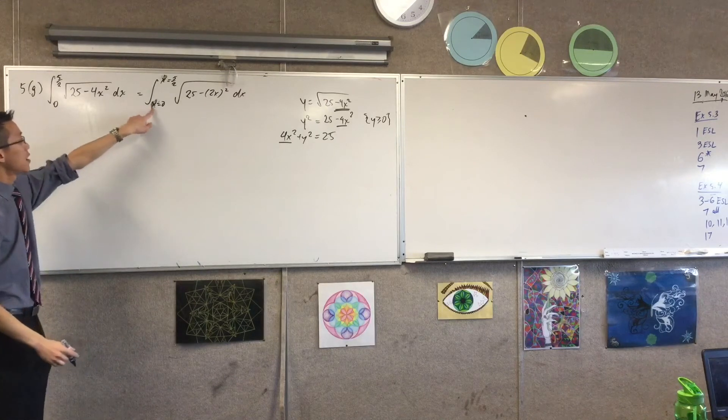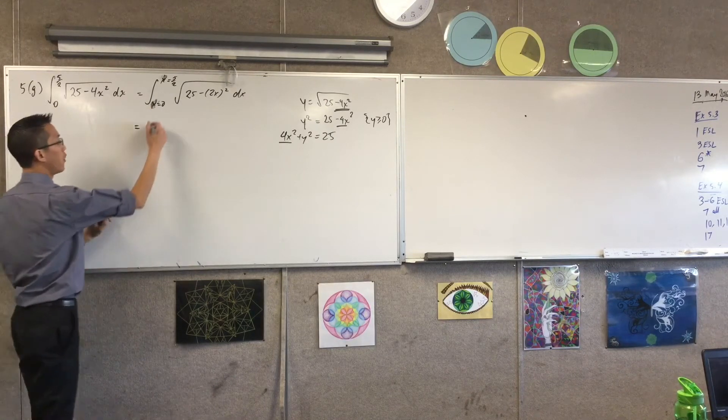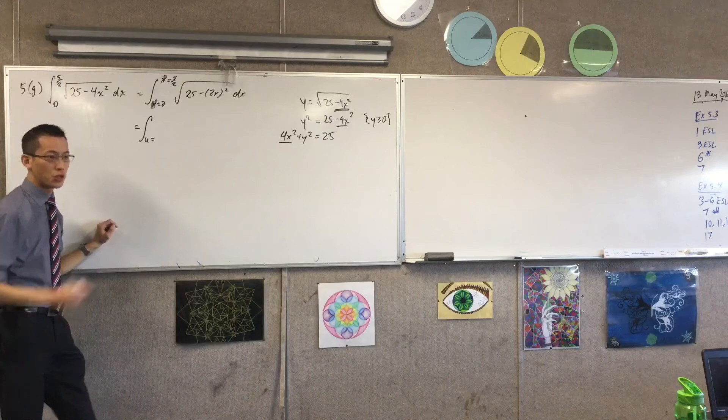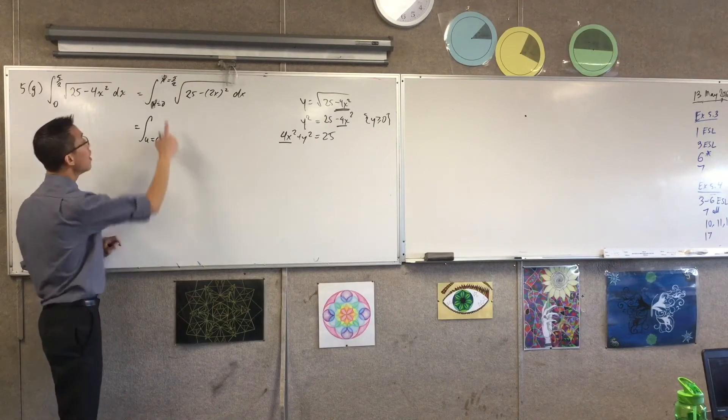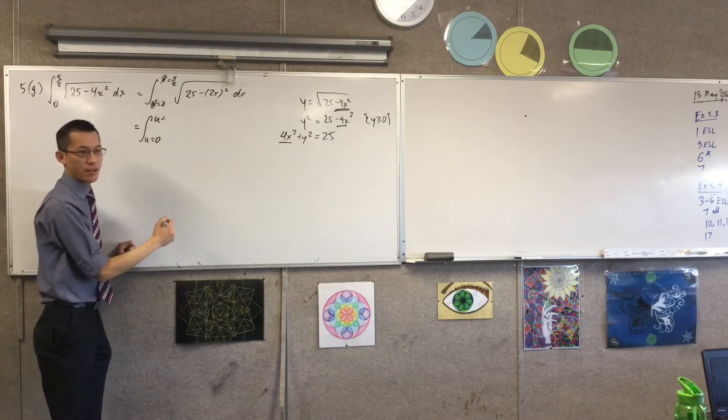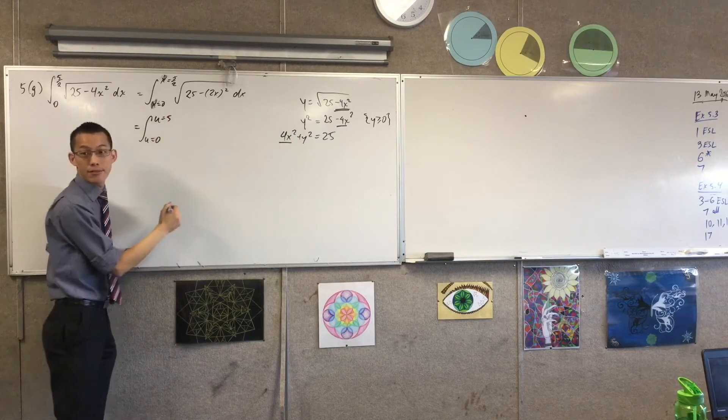If u equals 2x and x equals 0, what will u equal? 2 times 0 is still 0. When x equals 5 on 2, u is double that. So I'm going up to 5.